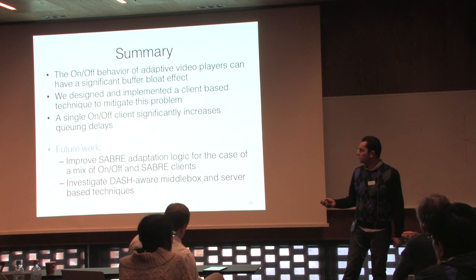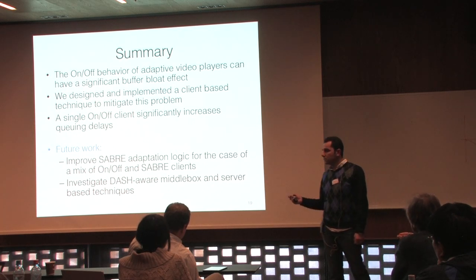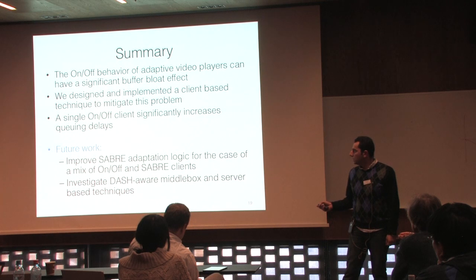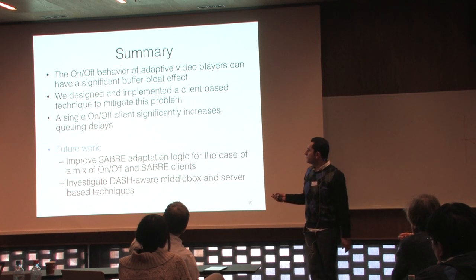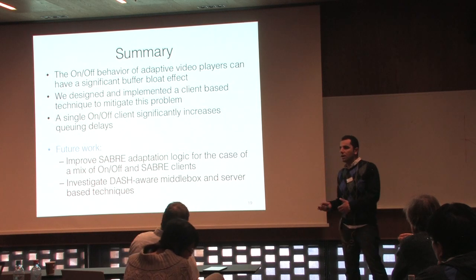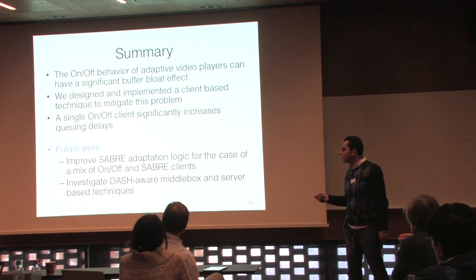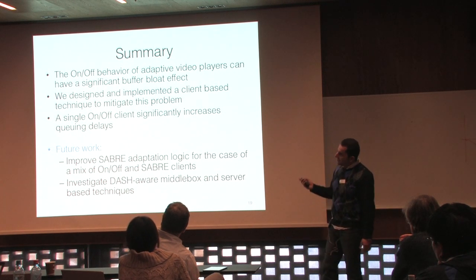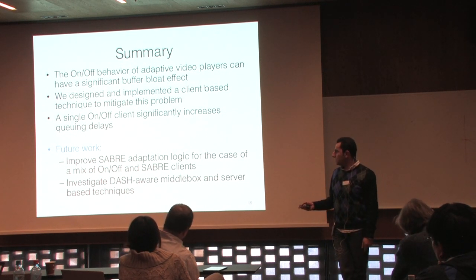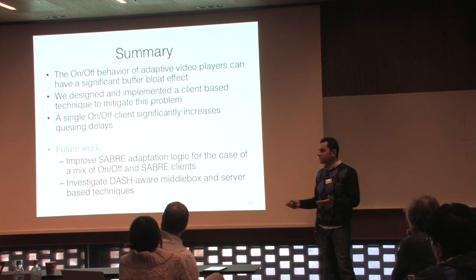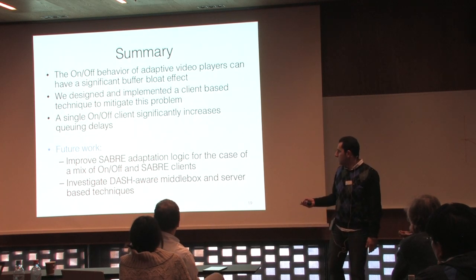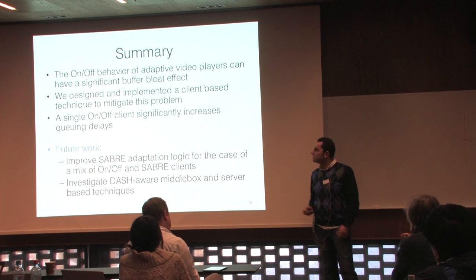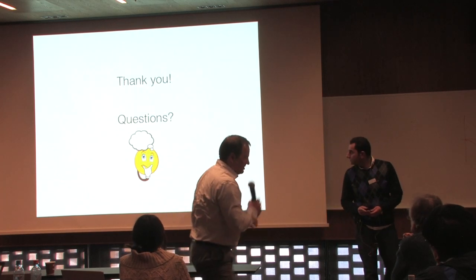To summarize: we've shown that the on-off behavior of adaptive video flows causes significant buffer bloat. We designed and implemented SABRE, a client-based technique to mitigate this. Even a single traditional DASH player causes significantly high queuing delay, so ideally all clients should use our technique. As future work, we plan to improve adaptation logic for mixed SABRE and on-off environments, and investigate DASH-aware middle-box and server techniques.